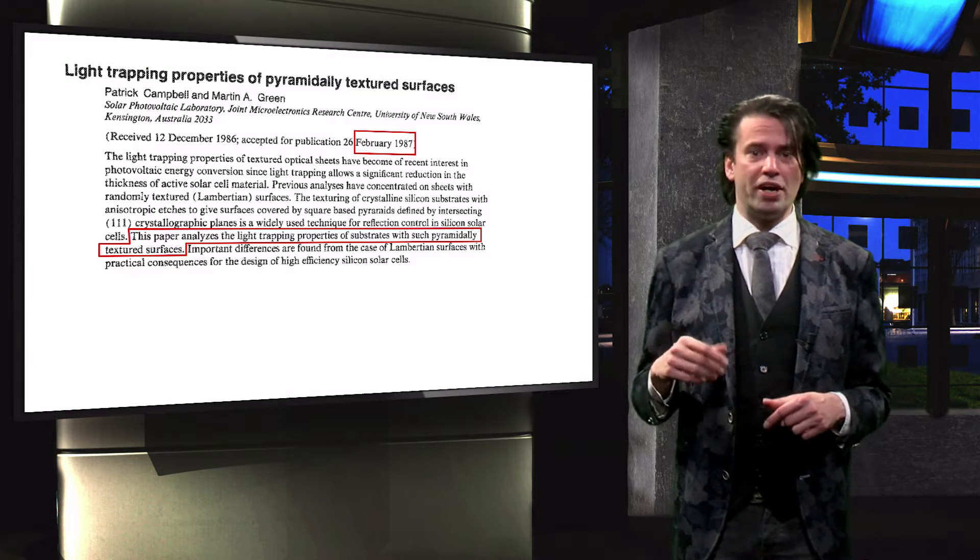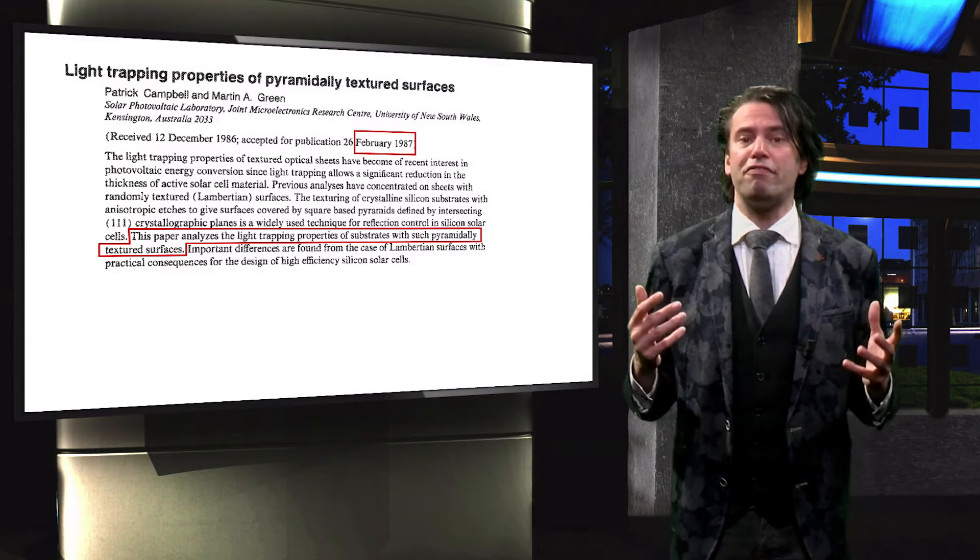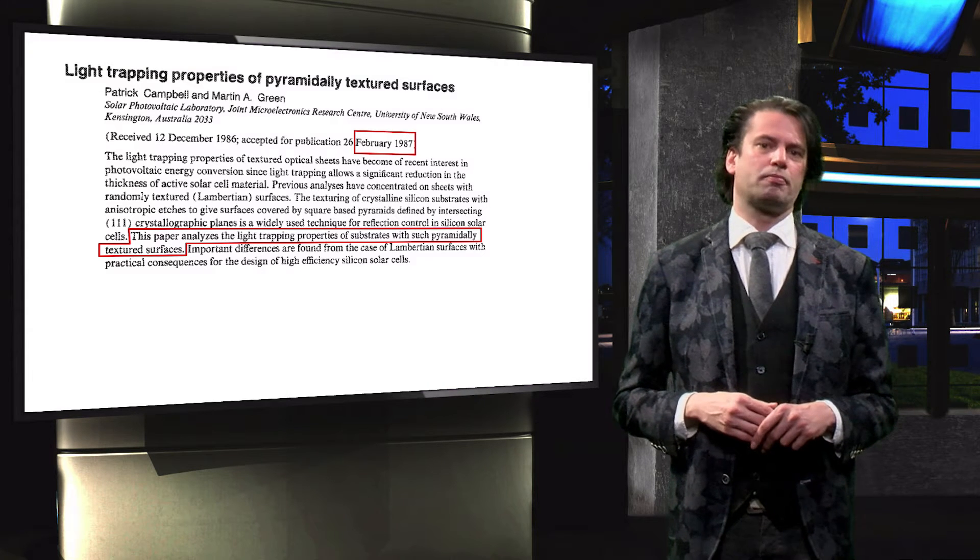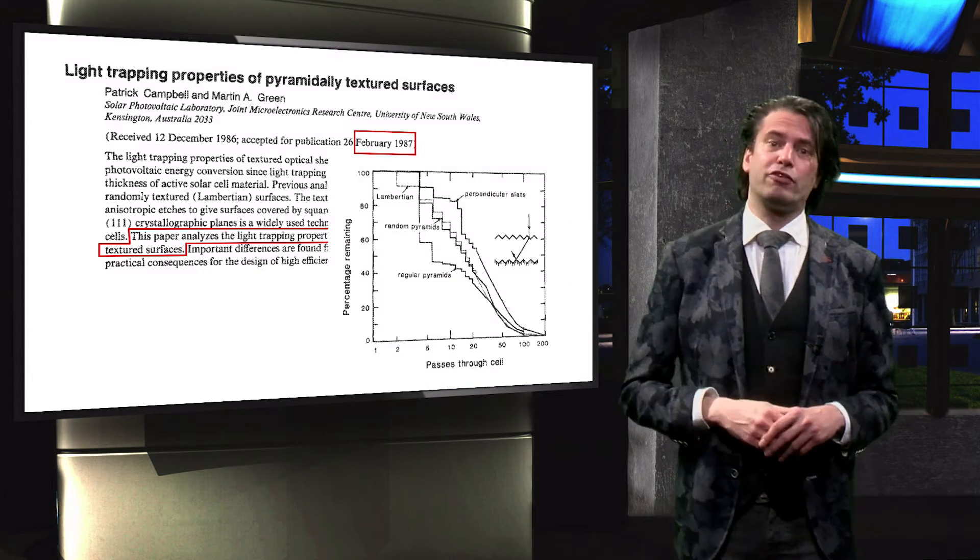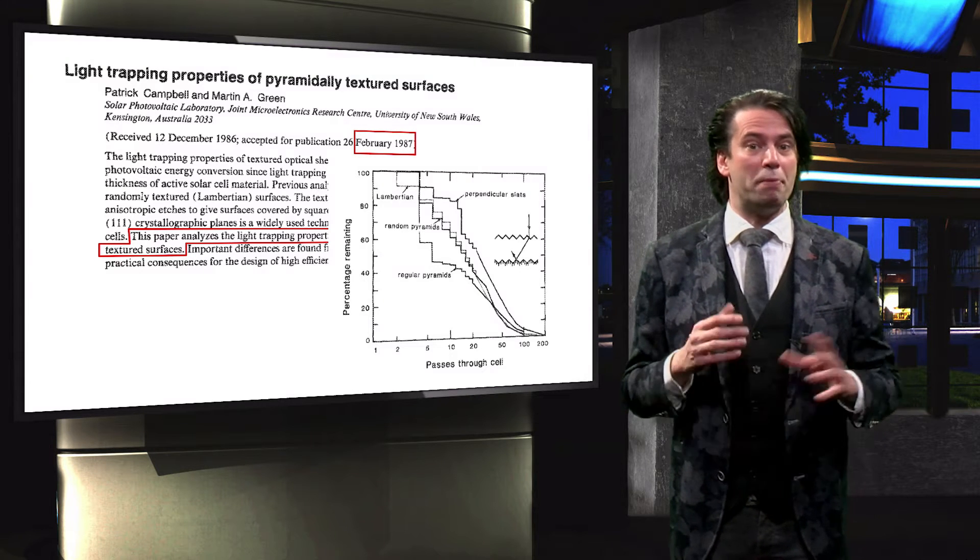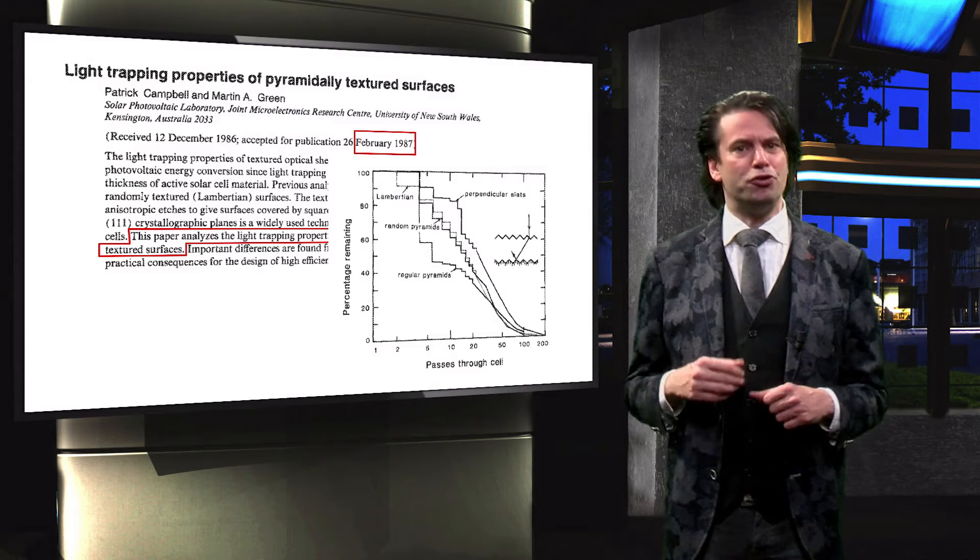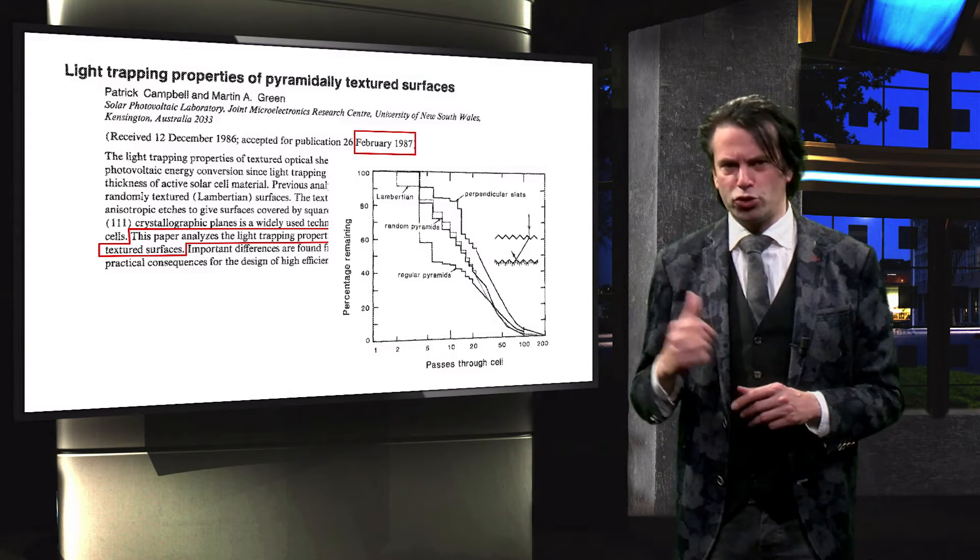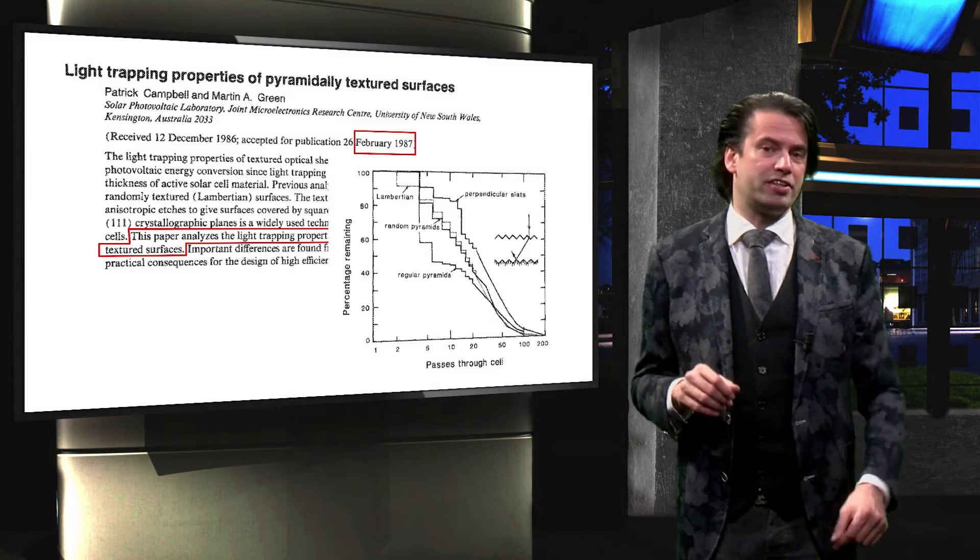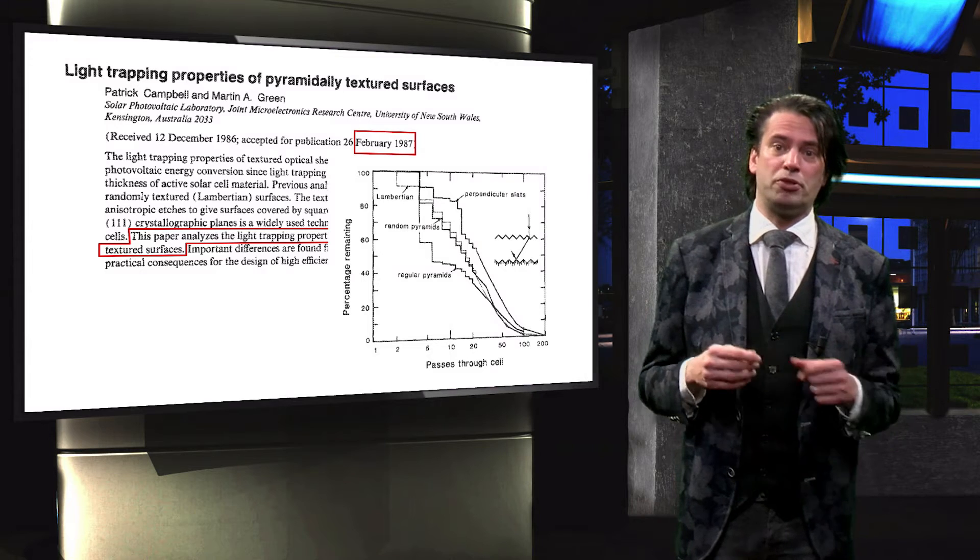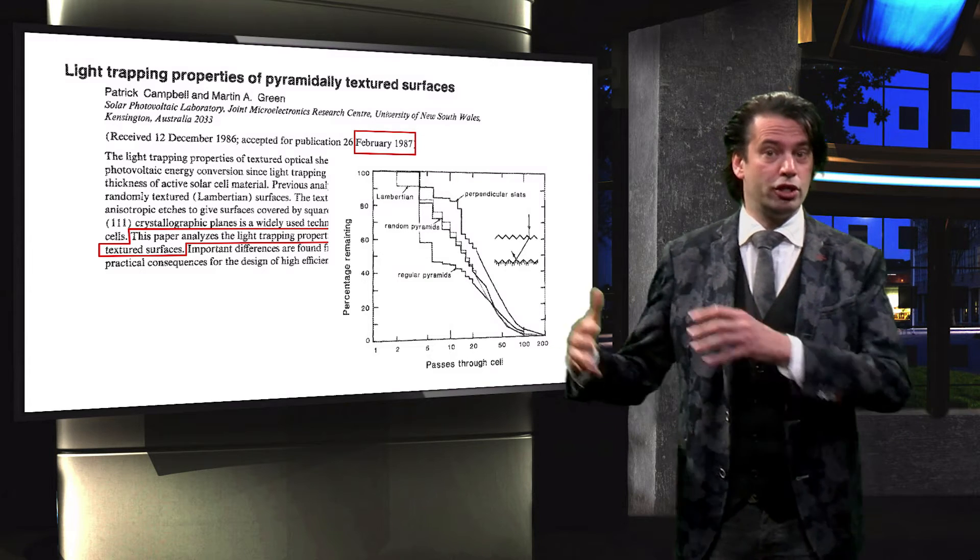They used ray tracing to simulate how effective the geometries were at trapping light. This figure, taken from the original paper, shows the percentage of incident rays remaining as a function of the number of passes through the cell. We can observe that there are significant differences in terms of light trapping efficiency between different layouts and geometries.